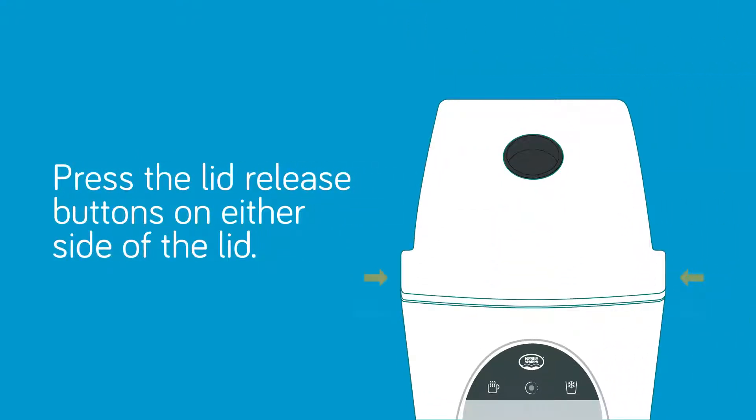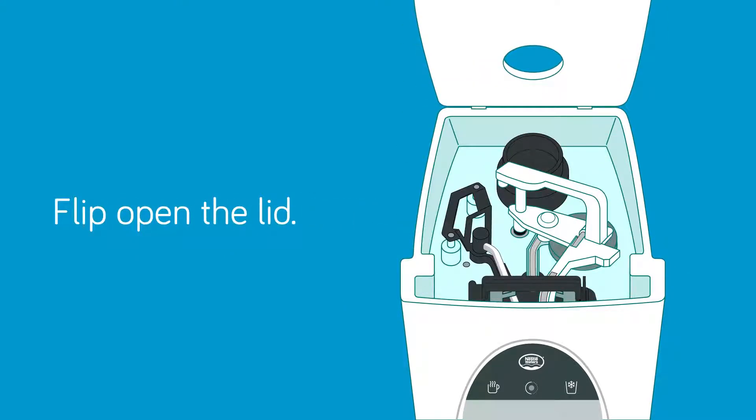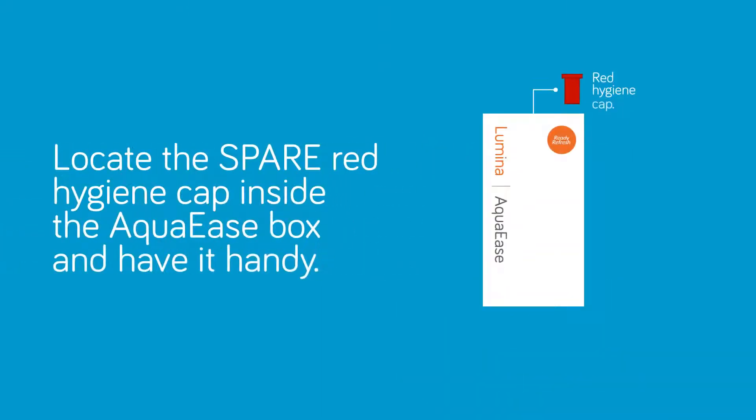The next step is to press the lid release buttons on either side of the lid and open the lid. Now press and lift the tab to release the gray bracket. Locate the spare red hygiene cap inside the Aqua Ease box and have it handy.